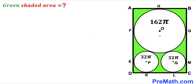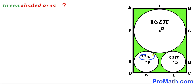Welcome to PreMath. In this video we have a big circle along with two smaller identical circles fully inscribed in a rectangle ABCD, such that the area of the big circle is 162π square units and the center of the big circle is O, whereas the area of the smaller circles is 32π square units each, with centers P and Q. Our task is to calculate the area of the green shaded region inside this rectangle.